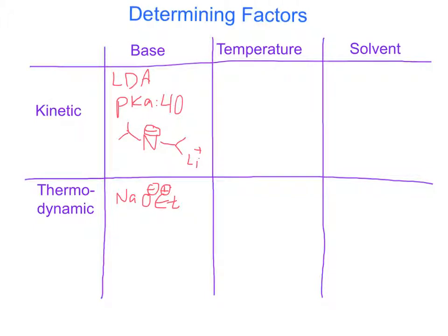Next, let's take a look at what temperatures we need to make these reactions occur. To get the kinetic product, we need really low temperatures to prevent the equilibrium shifting to the stable product. What we generally use is negative 78 degrees Celsius, or simply zero degrees Celsius. The thermodynamic product happens at higher temperatures. These higher temperatures allow more energy to enter the reaction, and that encourages the more stable product. For the higher temperatures, we generally just use room temperature, which we indicate to be 25 degrees Celsius.